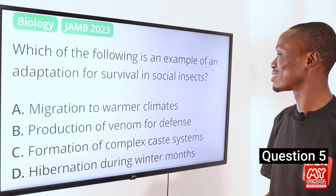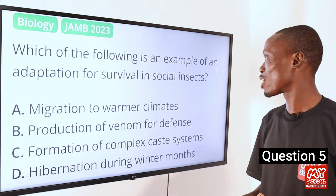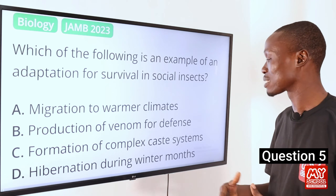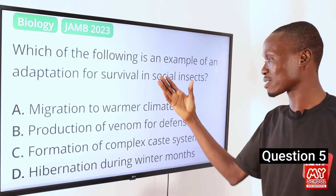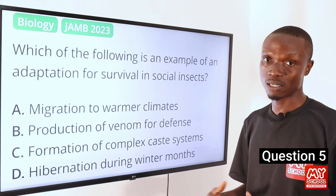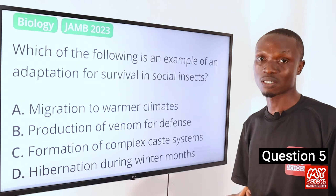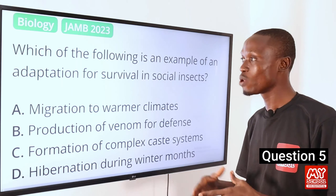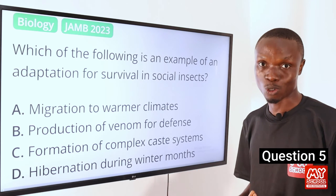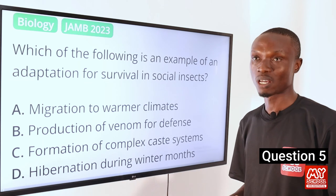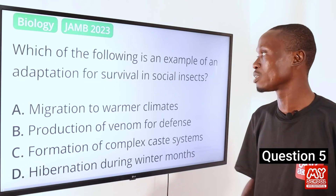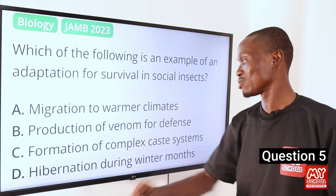Question 5. Which of the following is an example of an adaptation for survival in social insects? A, migration to warmer climate. B, production of venom for defense. C, formation of complex caste system. D, hibernation during winter months. The answer is option C, formation of complex caste system. Social insects like bees and others form complex caste systems allowing for division of labor within the colony, where different individuals specialize in foraging, reproduction, caring for the young, and defense, enhancing effectiveness and promoting survival.